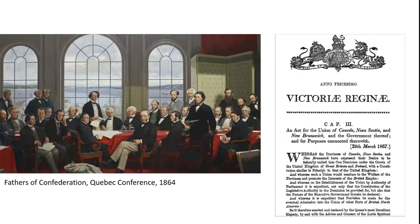The phrase 'peace, order, and good government' gradually evolved into a concept of Canadian national identity beyond its original constitutional purpose. Known as POGG in Canada, it became a counterpoint to life, liberty, and the pursuit of happiness. People suggest POGG defines Canada as having an interest in the collective well-being of its people, whereas life, liberty, and the pursuit of happiness, from the U.S. Declaration of Independence, promotes individualism.